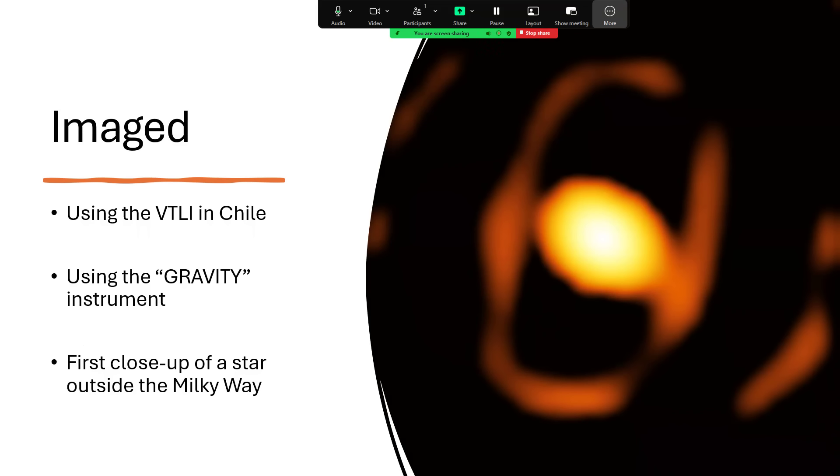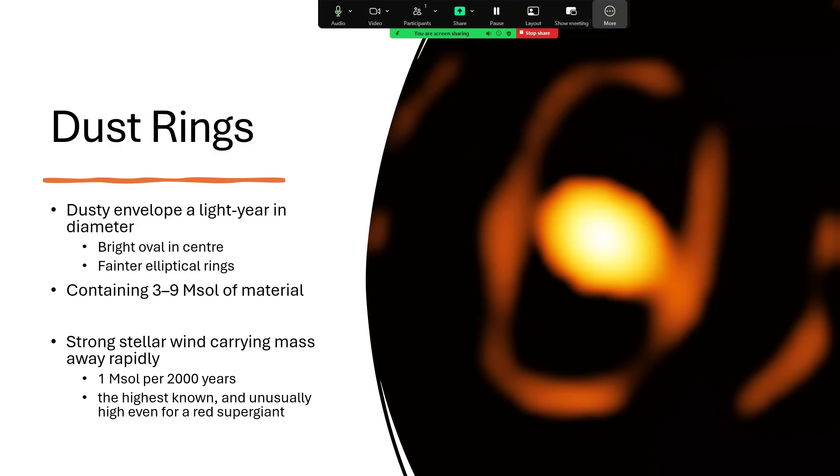We've been able to use this technique of interferometry to make images of stars like Betelgeuse and other giant stars in the Milky Way, and even stars like Capella. But this one is so much further away, being in the large Magellanic cloud. And what we're looking at is the star in the center with a dusty envelope. There's a bright oval in the center, and a fainter set of elliptical rings or loops around it.